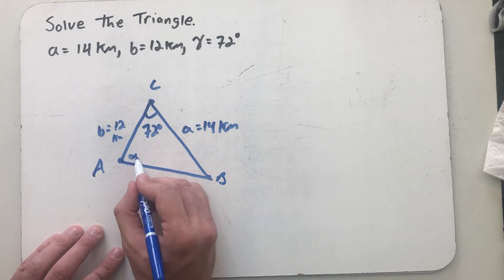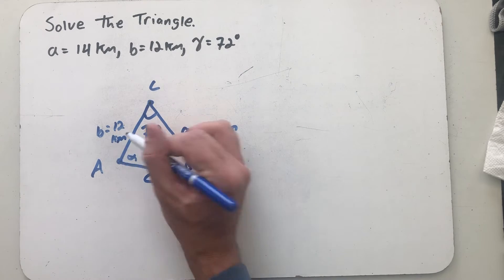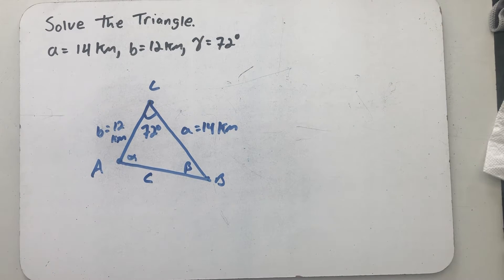And now I see angles alpha and beta. This picture's probably not very well drawn to scale, but that's okay. It gives us the information. These relationships are all we really need.